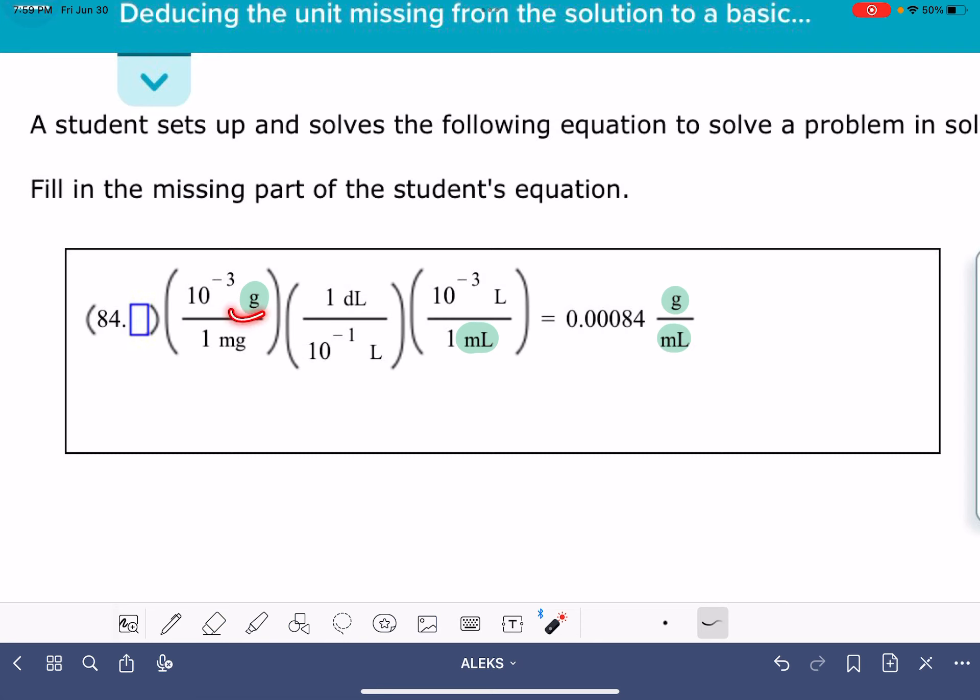After we've identified our important units, the next thing that you should do is take a look at the units that you actually have written down in front of you and see if any of those units are just going to cancel themselves out. For example, these units are going to cancel themselves out. We've got a liter on the bottom. We've got a liter on the top. Those two units are going to take care of themselves. We don't need to worry about them.